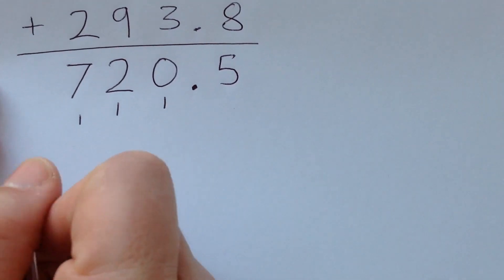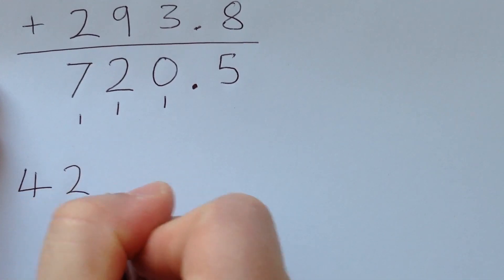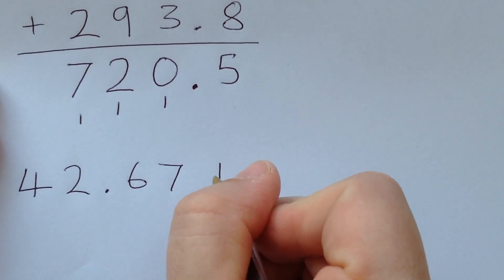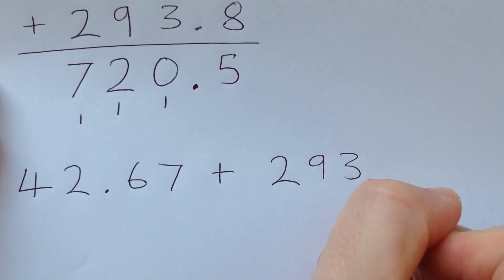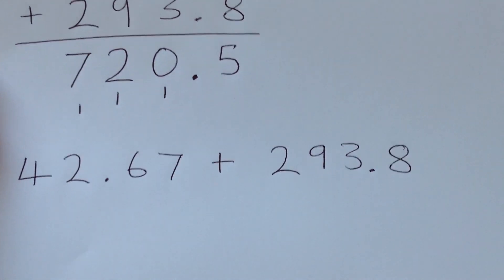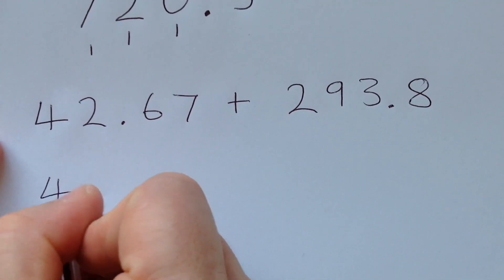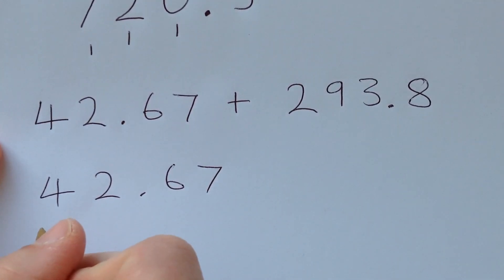Because what if the problem was this? 42.67 plus, and I believe the other one as it was, 293.8. Now what's going to happen is we're very tempted to do this. This is going to be wrong, by the way.